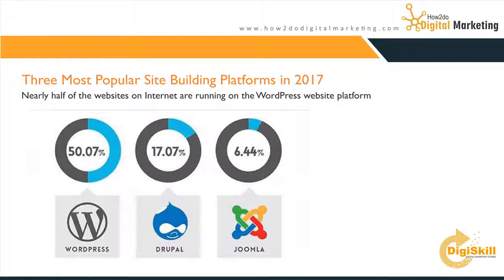The three most popular content management systems today are WordPress, Drupal, and Joomla. WordPress accounts for a little more than 50% of the entire universe of websites built. Drupal is about 17%, and Joomla is a little less than 7%. So these three CMS platforms together account for almost 70% of all websites built today on the internet.